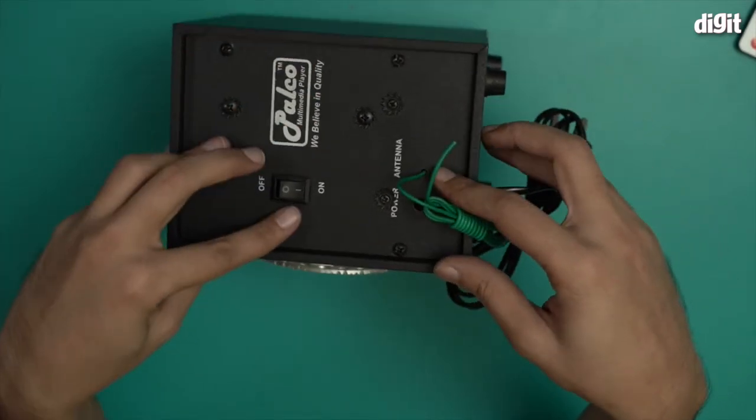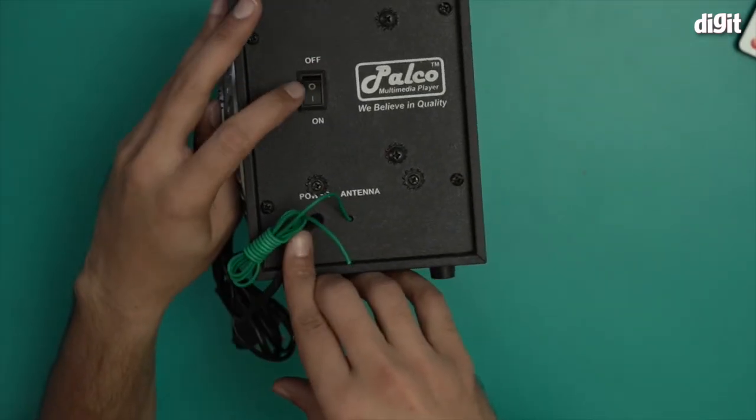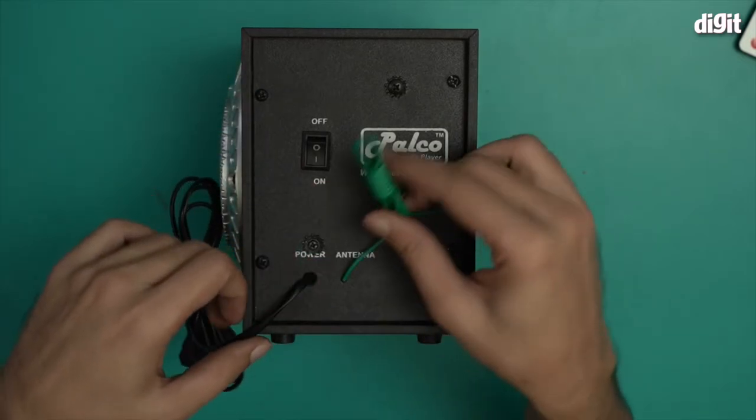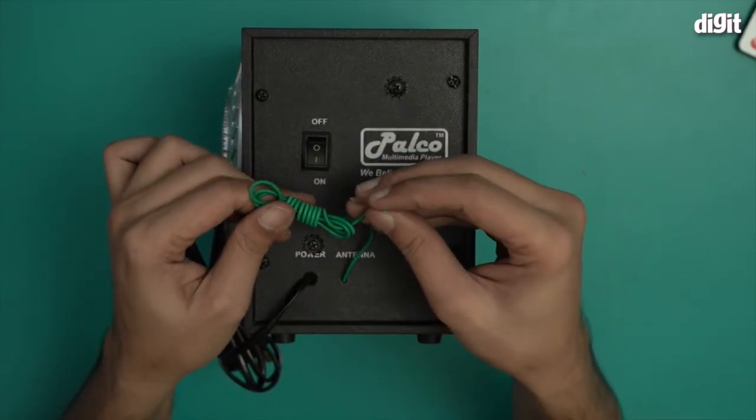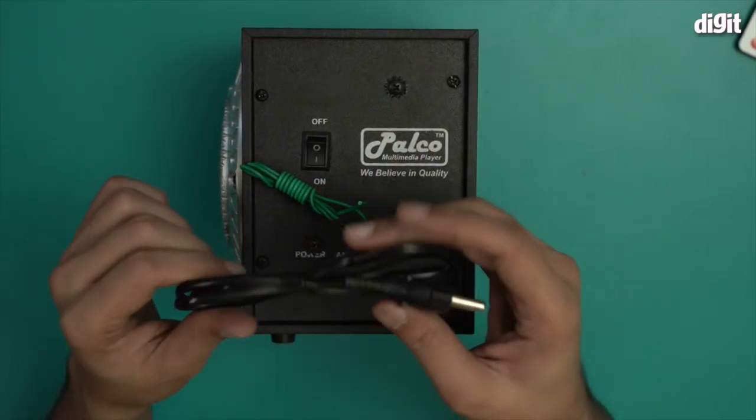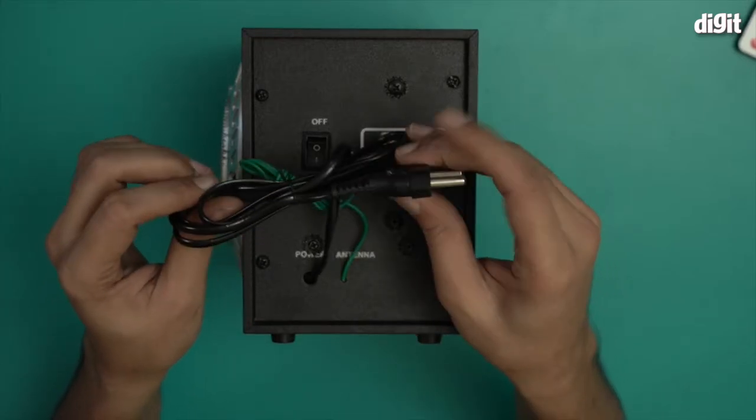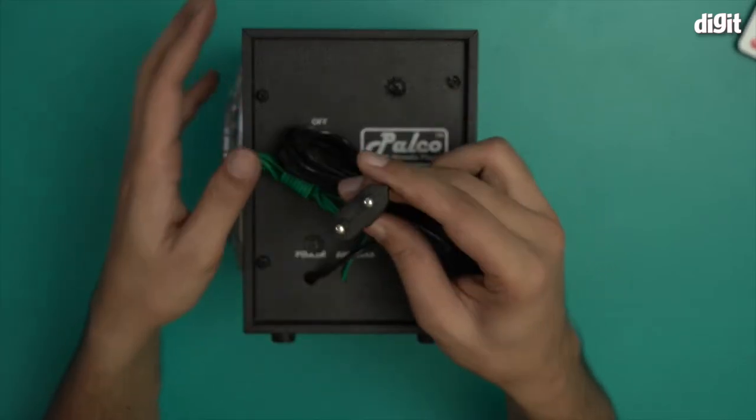So at the back, you have the power on-off switch right over here. There you can see this is the power on-off switch. This is of course your FM radio antenna, and this is the plug that powers this particular speaker.